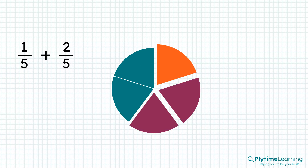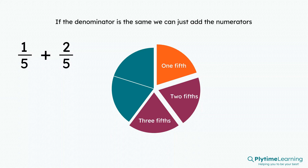Now we can add them. We have one fifth, two fifths, three fifths. So one fifth plus two fifths — the denominators are the same, so we can just add the numerators. It equals three fifths.